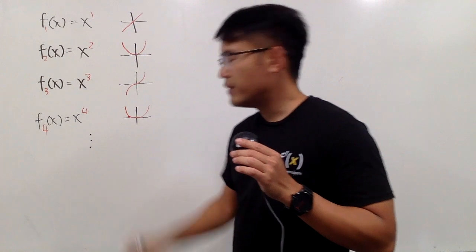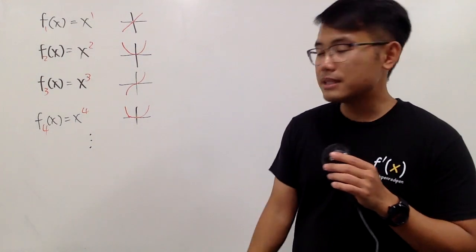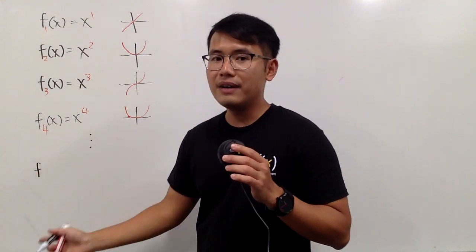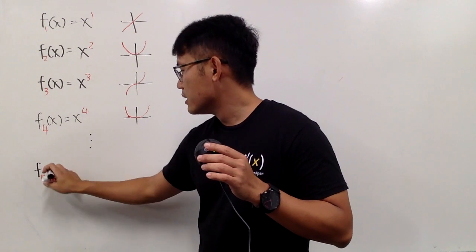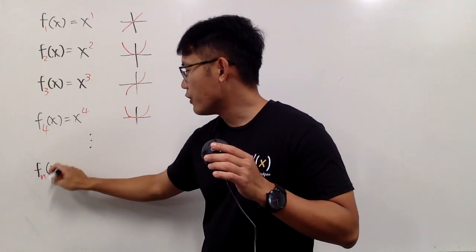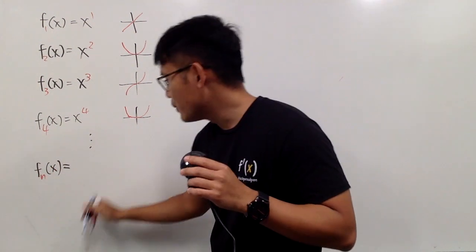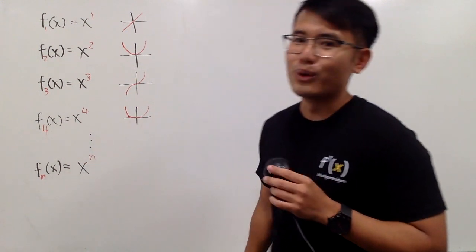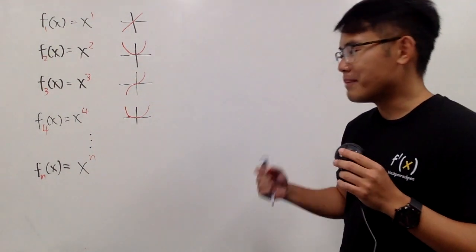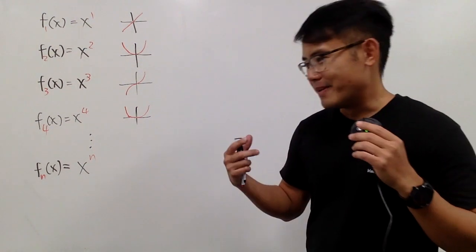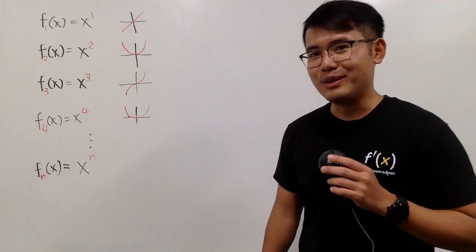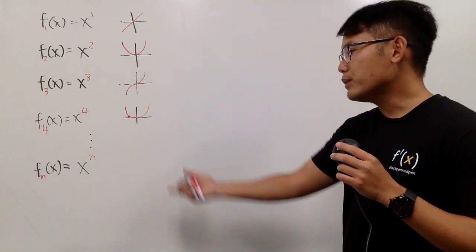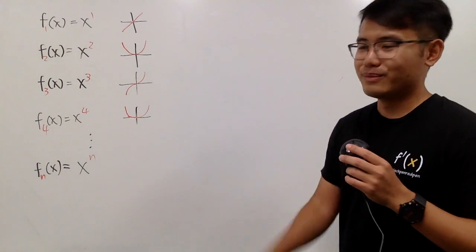We are going to do this infinitely many times. I can write a formula: fn — the nth term of my sequence of functions — is just x to the nth power. So we are working with a lot of continuous functions, because of course x to the n is continuous.